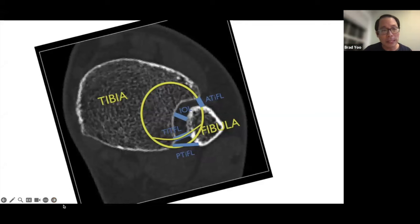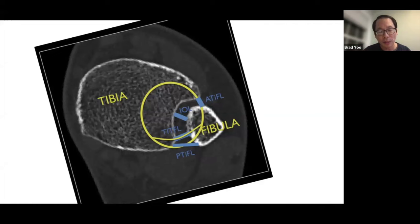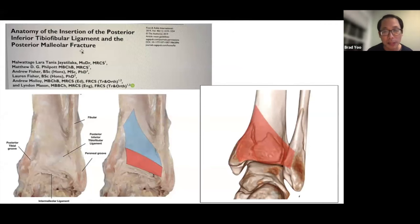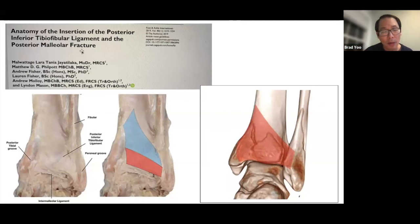An overview of the posterior osteoligamentous anatomy highlights the posterior tibial fibular ligament and transverse inferior tibial fibular ligament — two posteriorly based fascicles that bind the posterolateral tibia to the fibula. Anatomical studies show this posterior structure attached to the posterior malleolus is a very broad, fan-shaped structure extending from the posterolateral fibula to the posterior lateral tibia and all the way posteromedially.